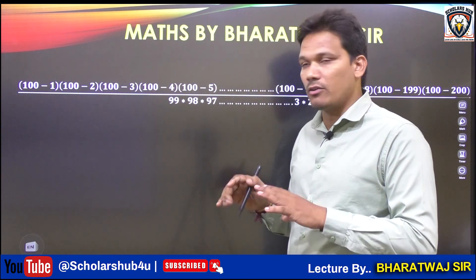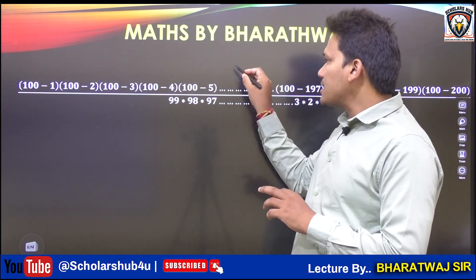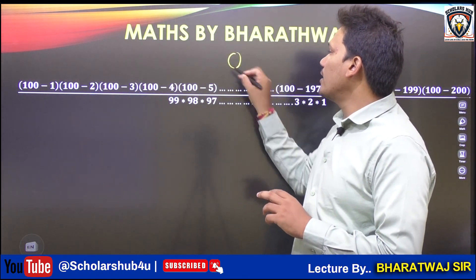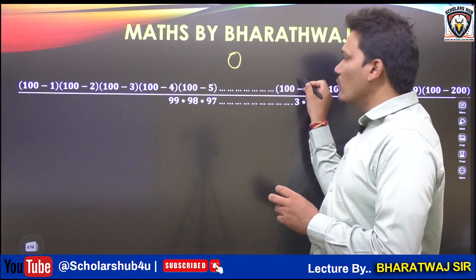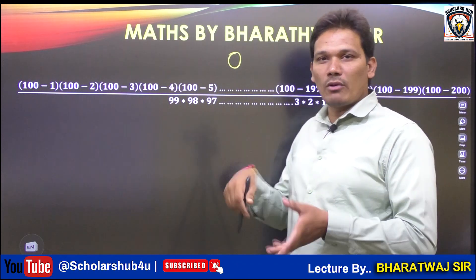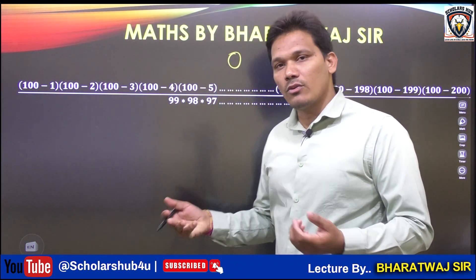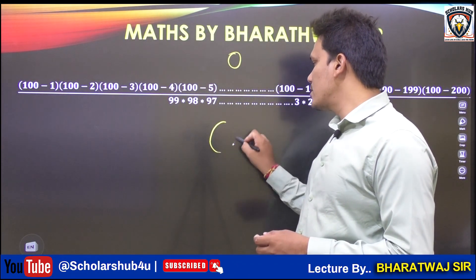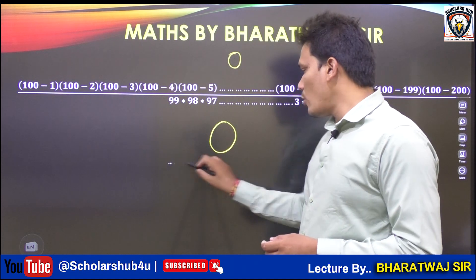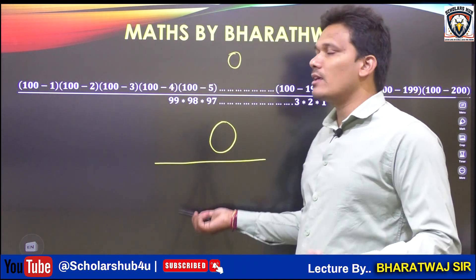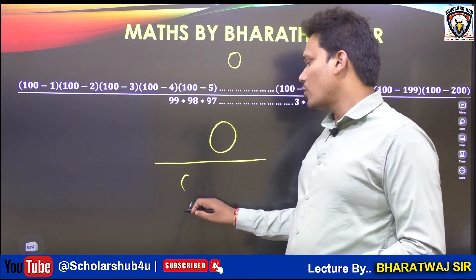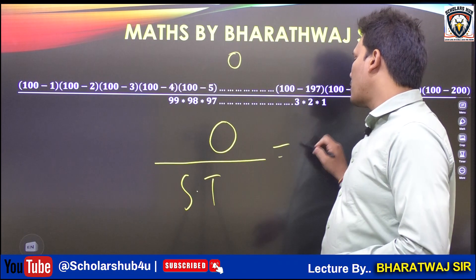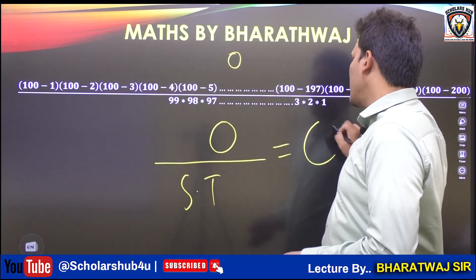So what is the value of (100 minus 100)? It equals 0. Now, 0 into something — what is the value of 0 multiplied by something? Again 0. So the numerator value equals 0. And 0 divided by anything — 0 by something — this value will become 0.